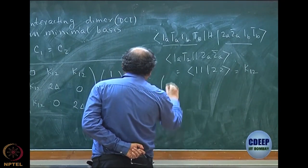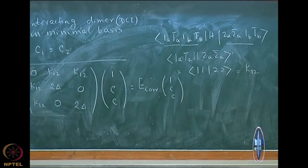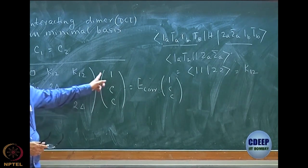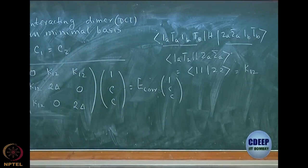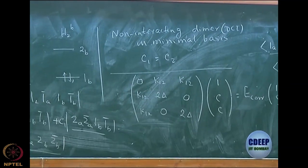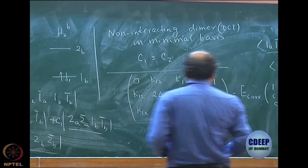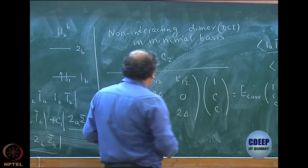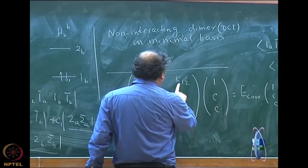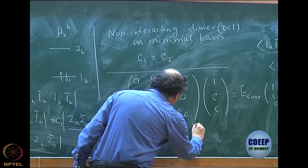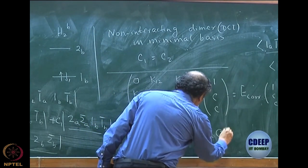So E-correlation from the first equation is 0 times 1 plus K12 times C plus K12 times C, giving E-correlation equal to 2 times K12 times C. For the monomer, it was E-correlation equals C times K12, and here for the dimer it is 2 times K12 times C. This looks beautiful — size consistent — except that we do not know the value of C yet.